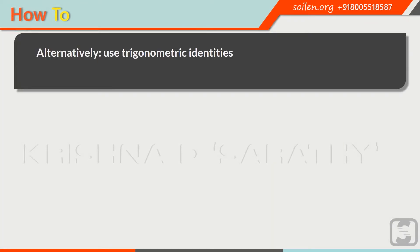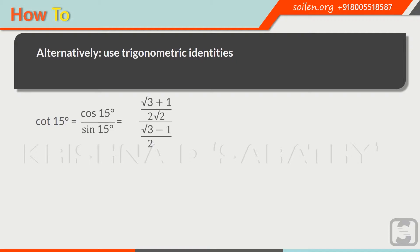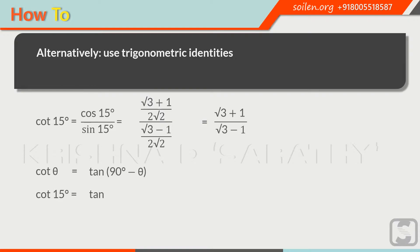Alternatively, you can find the value of cotangent of 15 degrees using trigonometric identities: cotangent of 15 degrees equals cosine of 15 degrees over sine of 15 degrees. You can also use cotangent theta equals tangent of 90 degrees minus theta, so cotangent of 15 degrees equals tangent of 75 degrees. This way, you can calculate or remember many values together very easily.